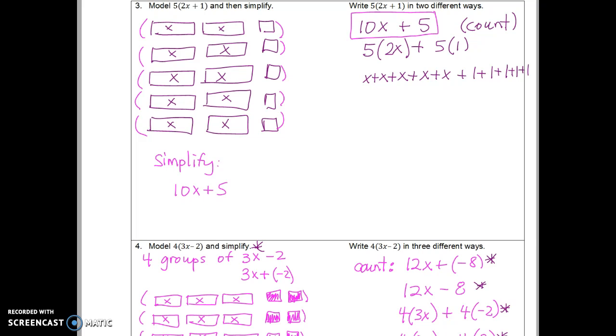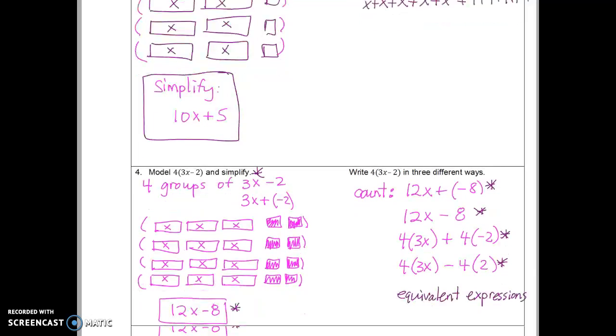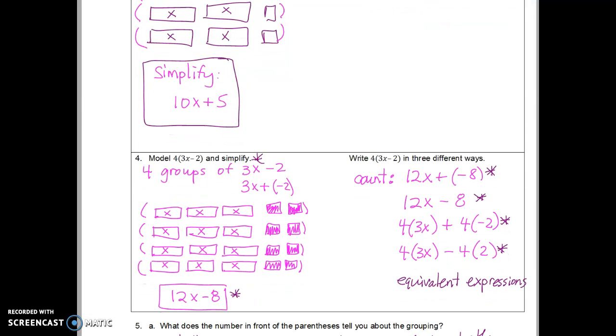Okay, folks, one thing I forgot to mention in number 3 is the directions, which I'm always talking to you about reading, says to model and then simplify. So in number 3, by counting up the tiles, we simplify and get the expression 10x plus 5. So that's really important. In number 4, when you model 4 groups of 3x minus 2, remember it's 4 groups of 3x plus negative 2, which helps me avoid taking away 2 positive tiles. Because if I have to take away 2 positive tiles, I need 0 pairs.